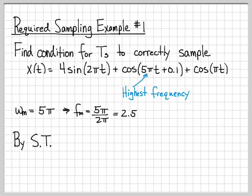By the sampling theorem, we know that we must sample at 2 times fm or greater. If we actually plug this in, 2 times 2 and a half gives us 5. So our sampling rate must be 5 samples per second or larger. We must have fs greater than or equal to 5.